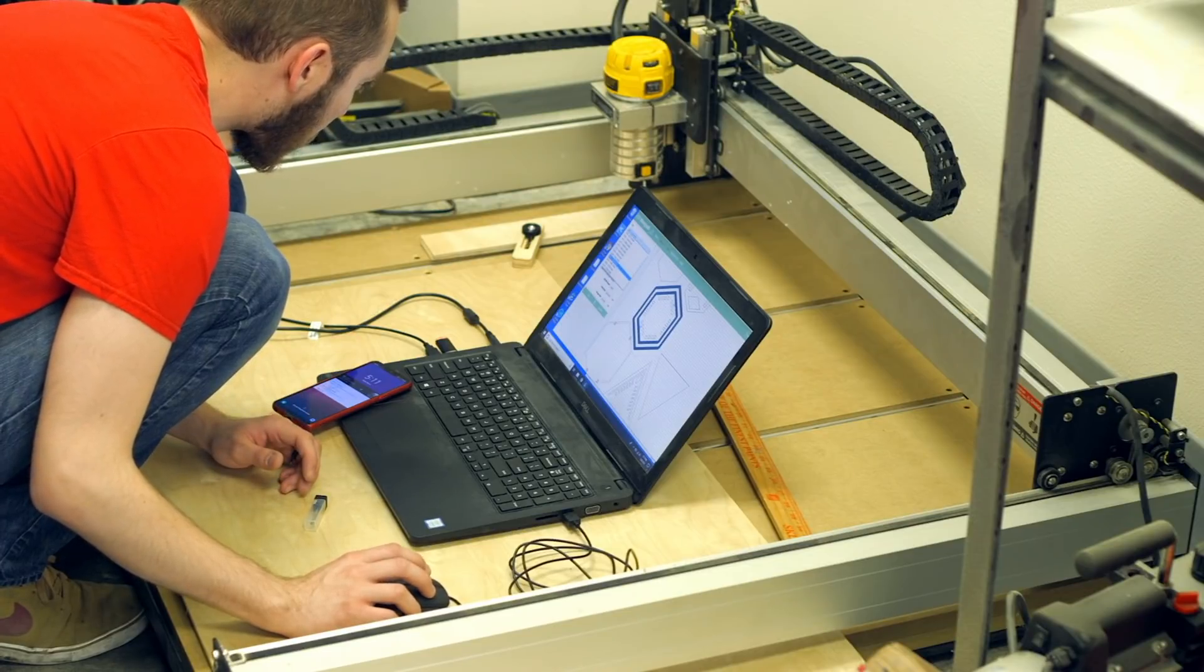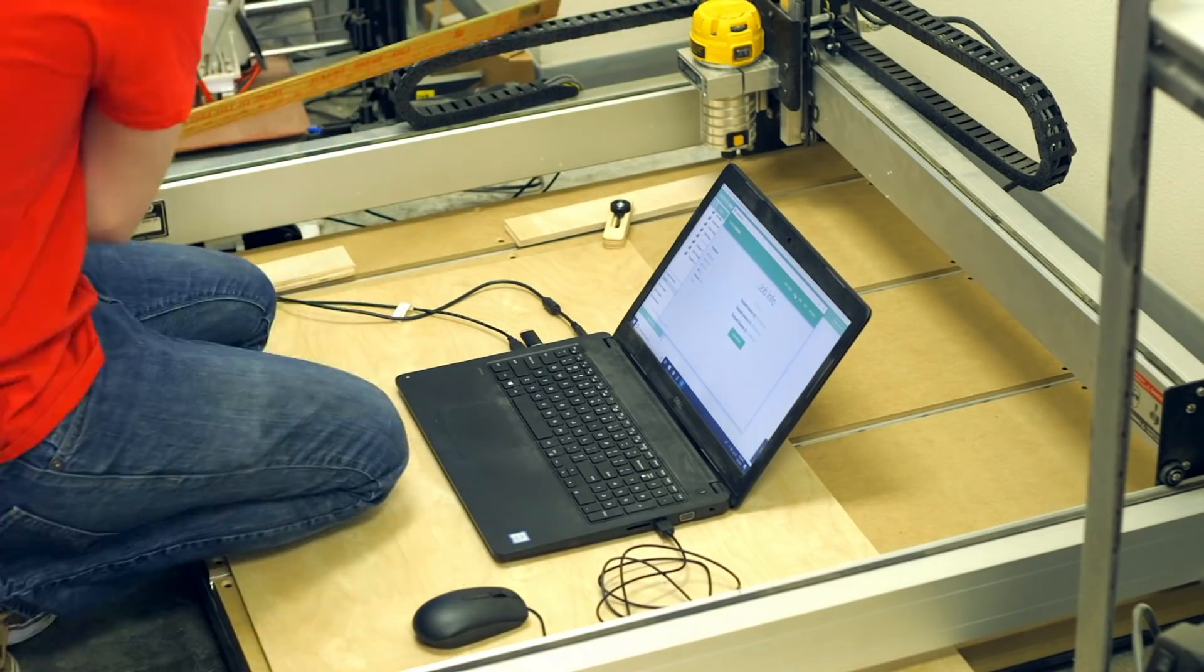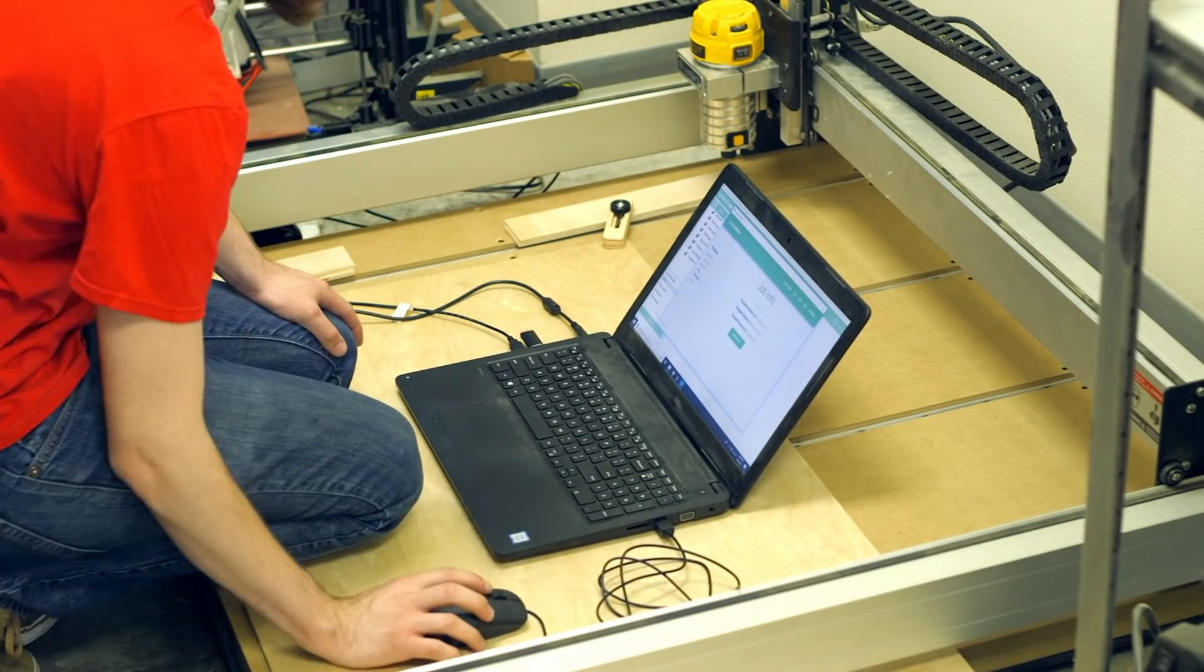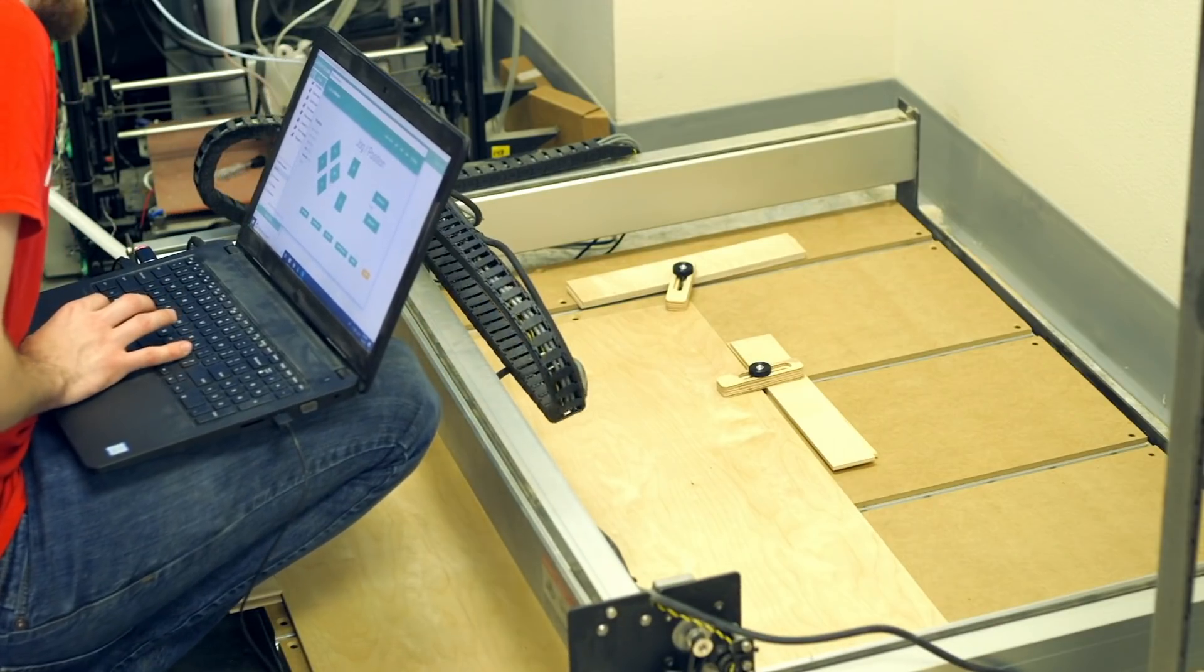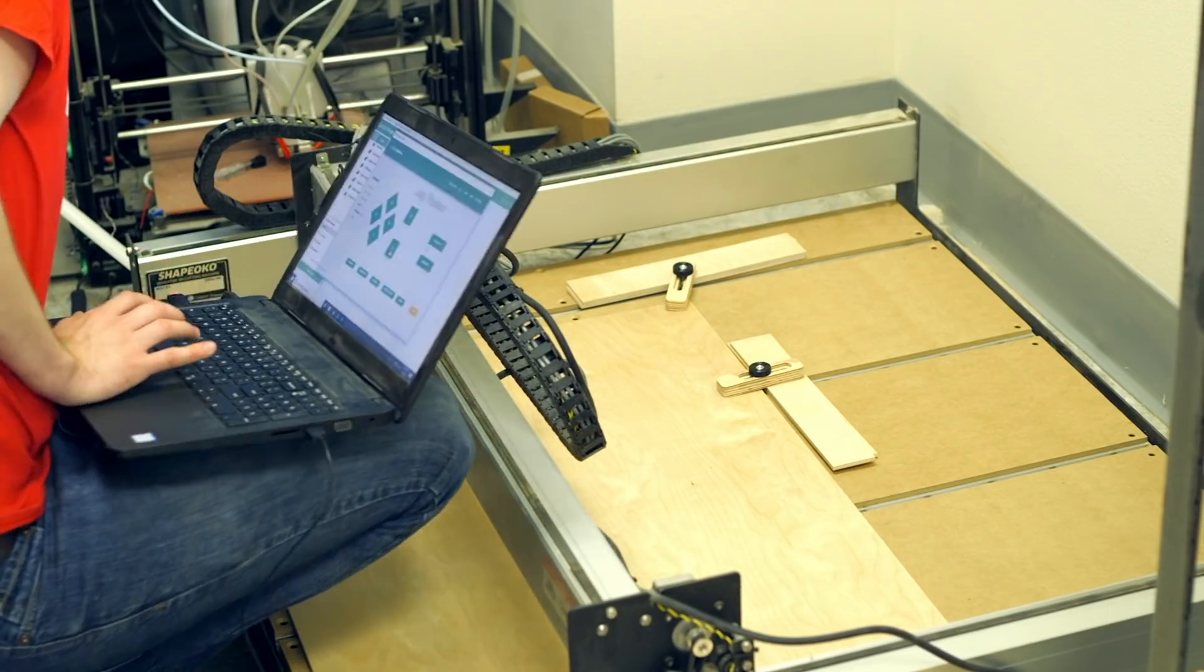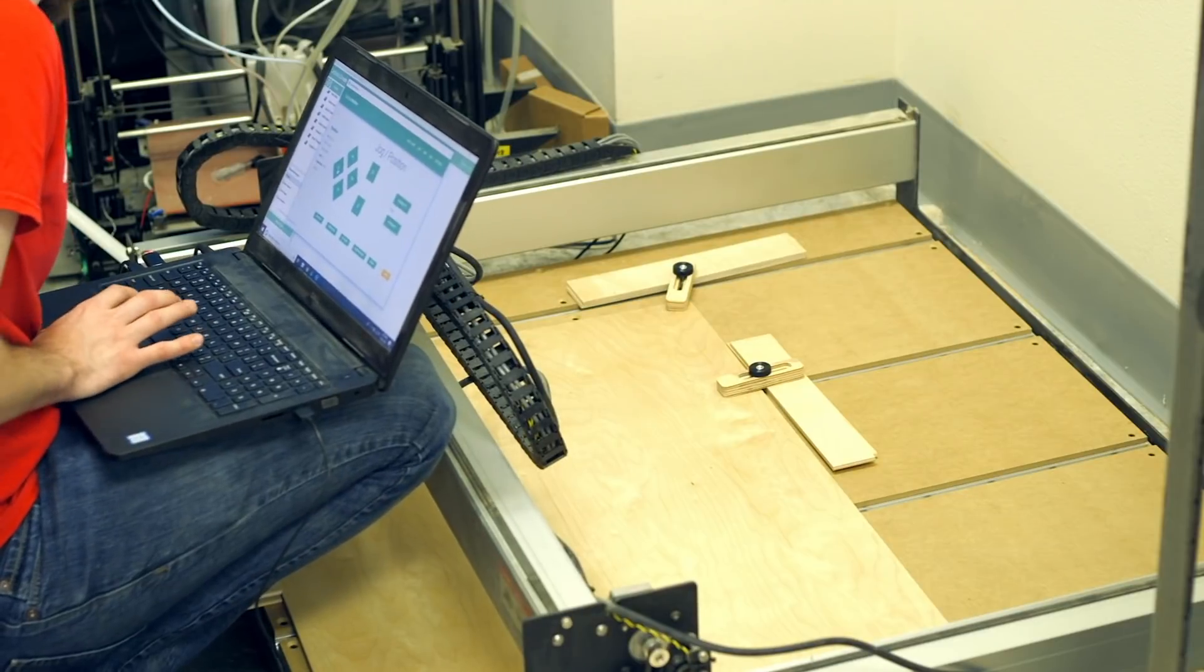With the kit installed, I just had to jump into Carbide Create to take the vector files I already had, figure out the size of my workpiece, and just get it set up for carving, which just required that I home it, set where the zero is for the X, Y, and Z, to notice the thickness of my material, and then I could go ahead and get started.